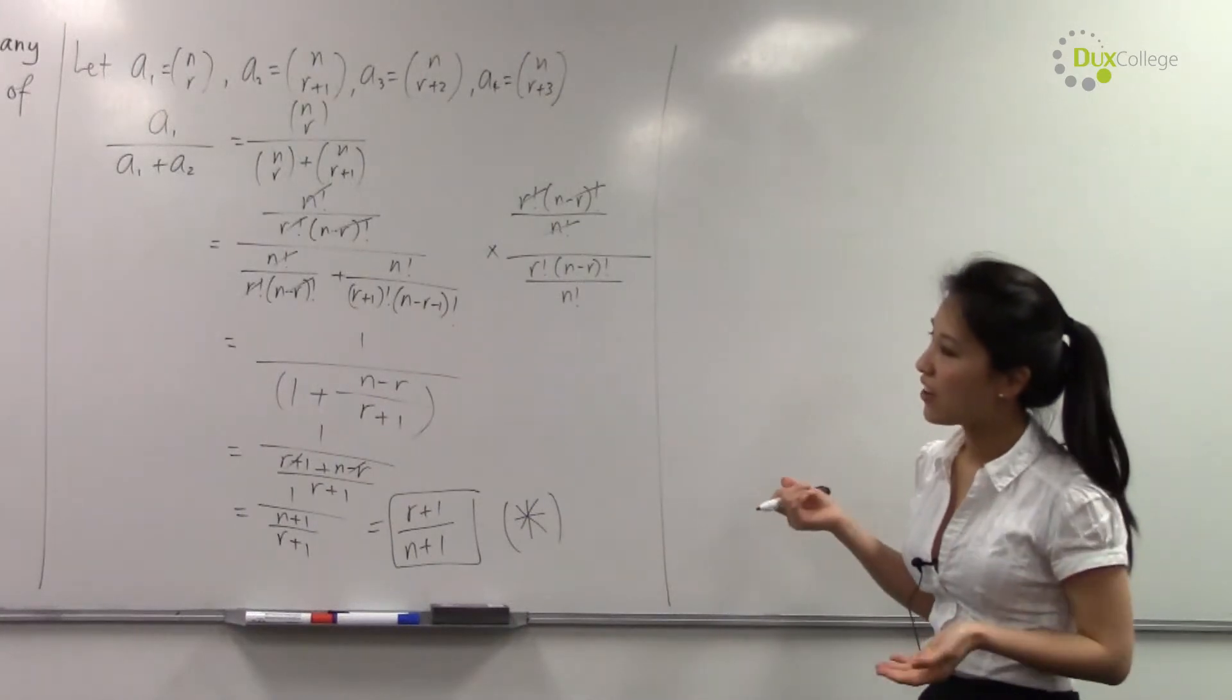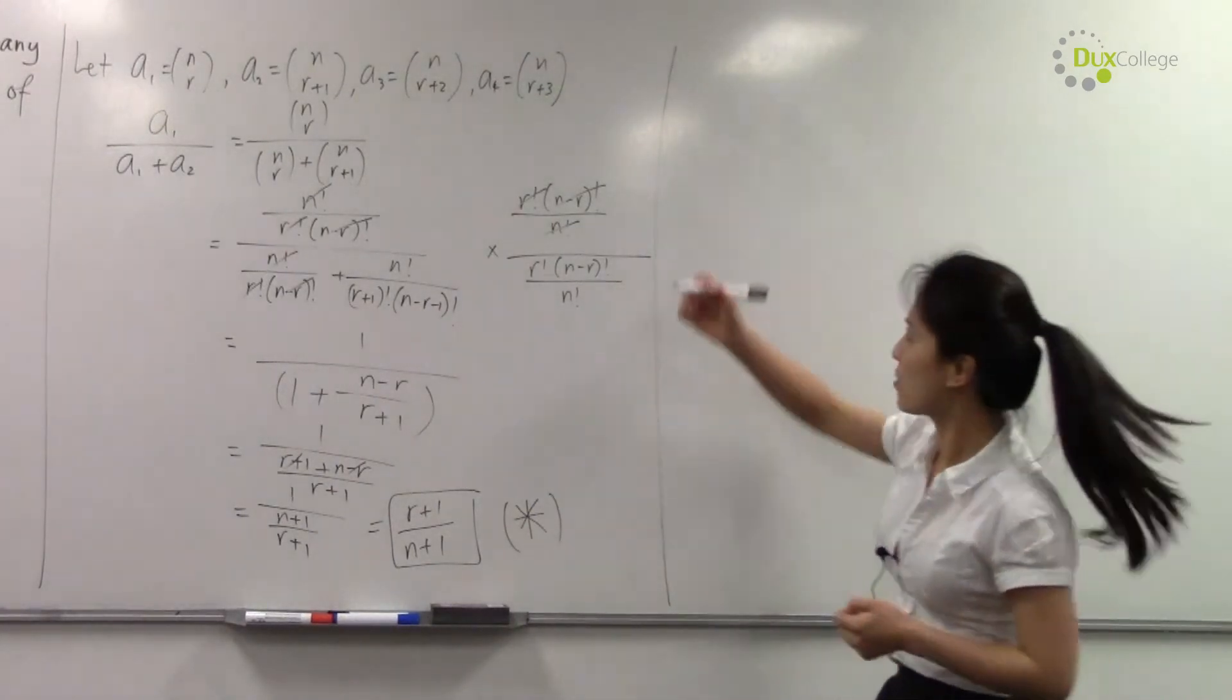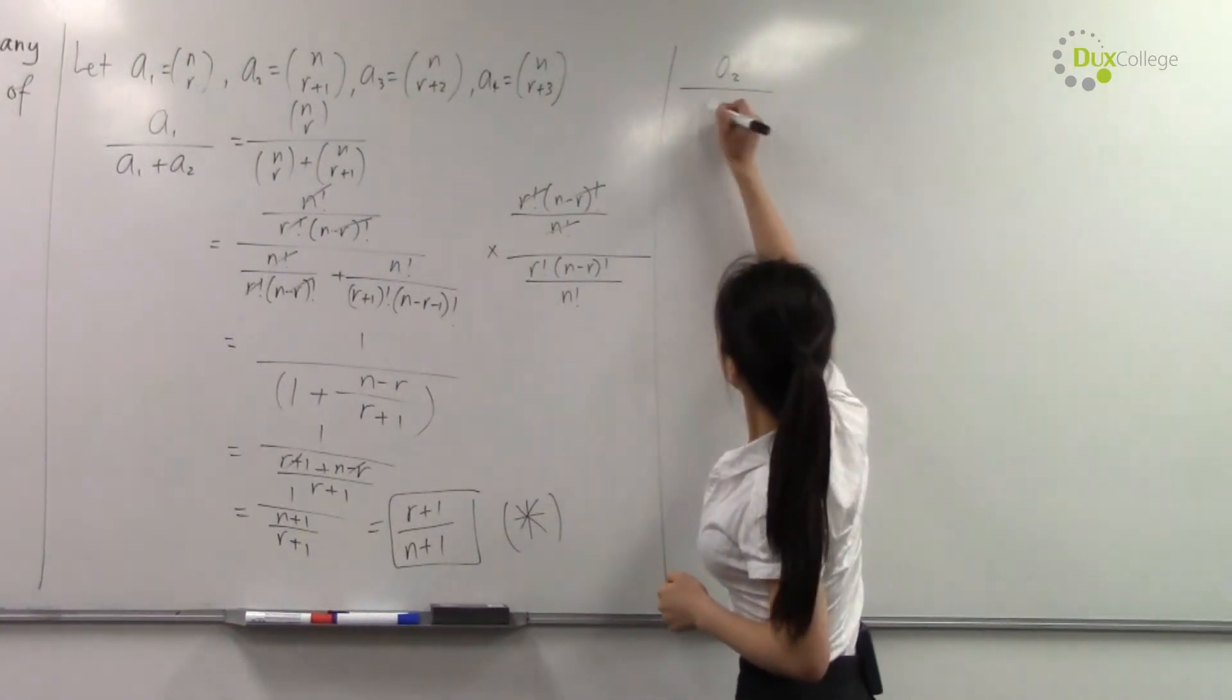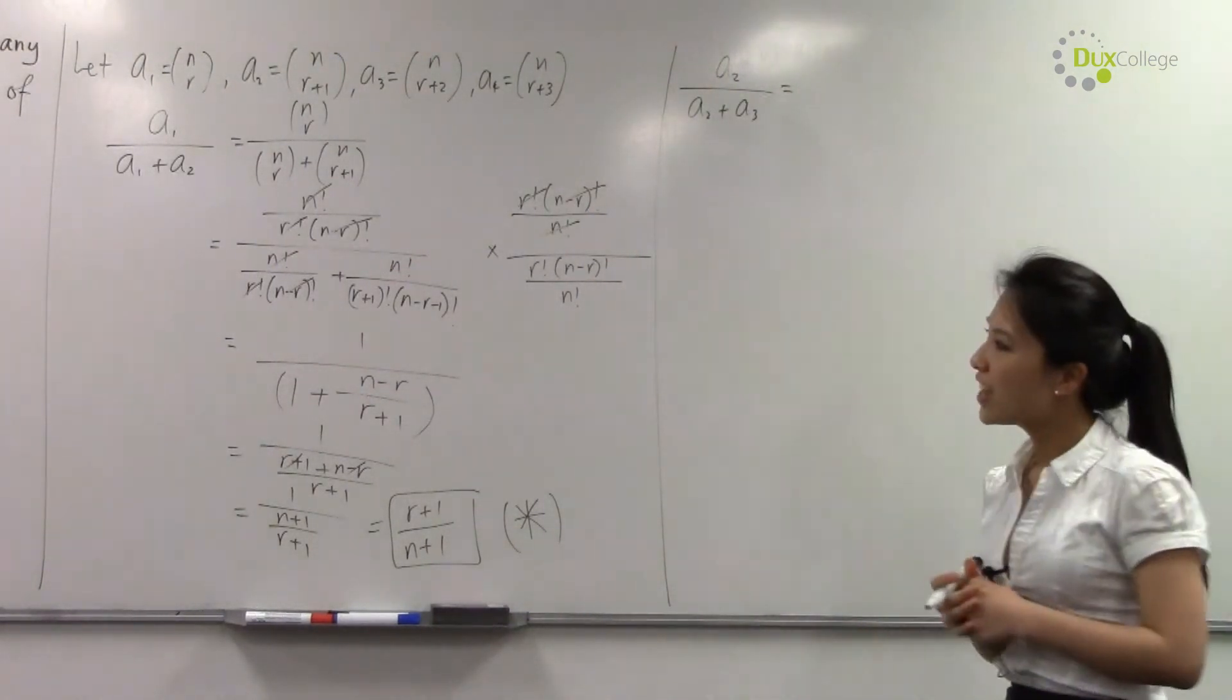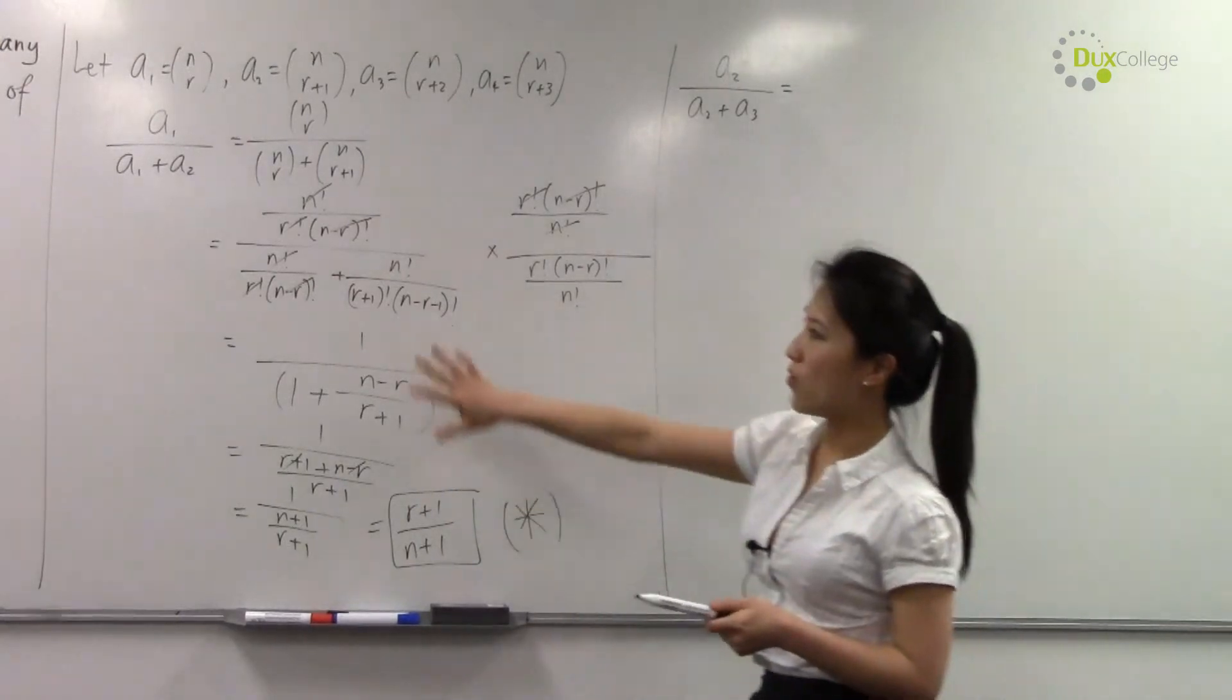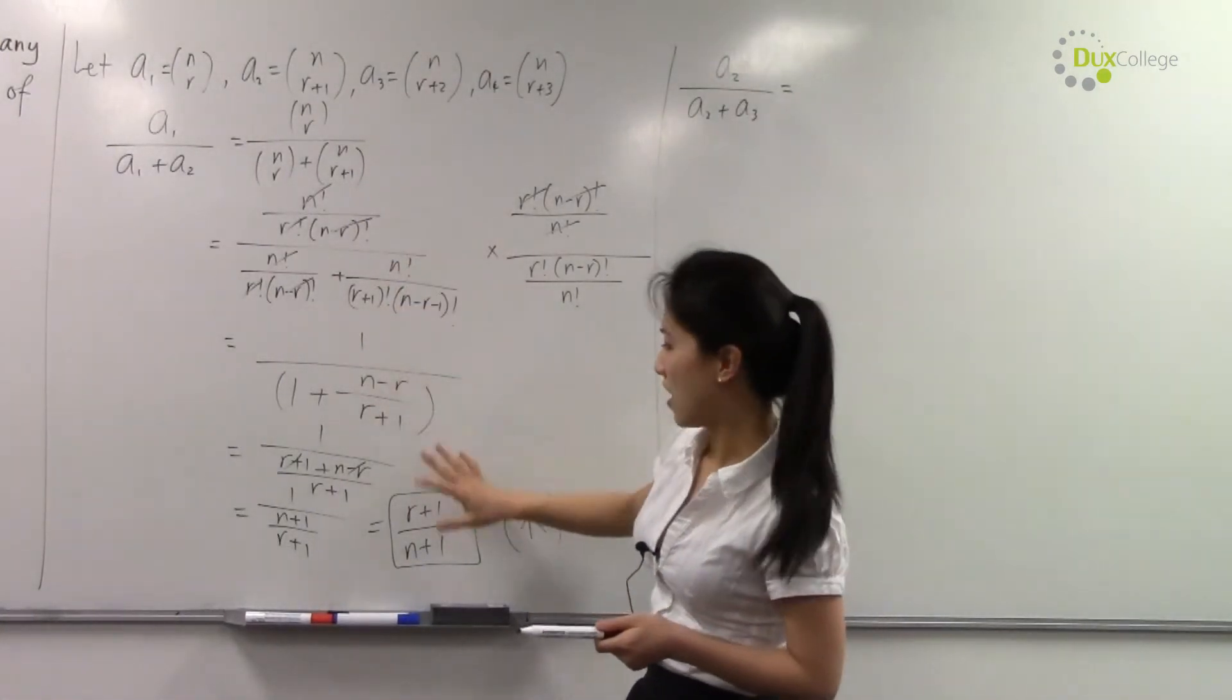So which means a₁ over a₁ plus a₂ equals (r+1) over (n+1). Let's find the value of a₂ over a₂ plus a₃.